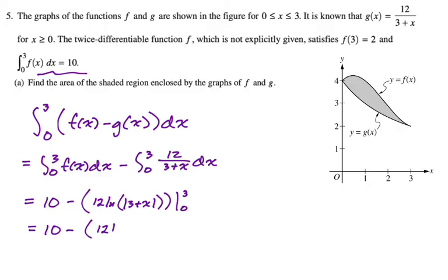So we're going to have to use the fundamental theorem on this. 10 minus quantity. Plugging in 3 gives us 12 natural log of 6. Minus plugging in 0 gives us 12 natural log of 3. You should leave this. So you shouldn't really do anything more than this,